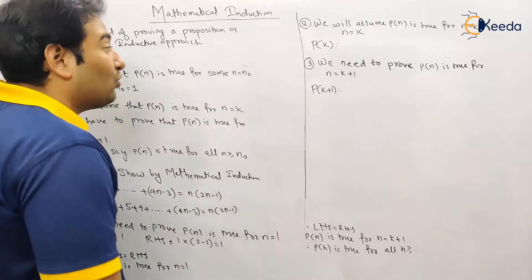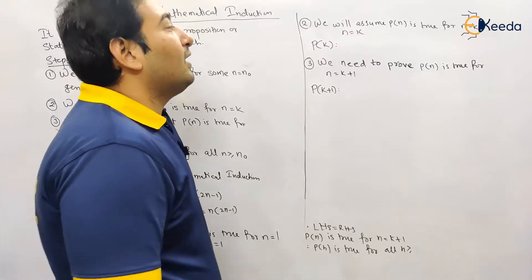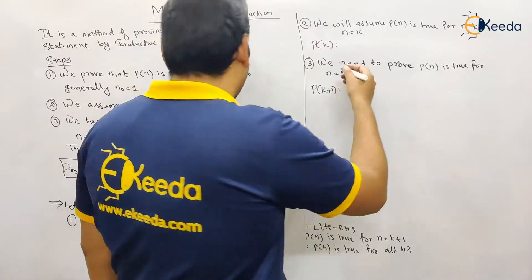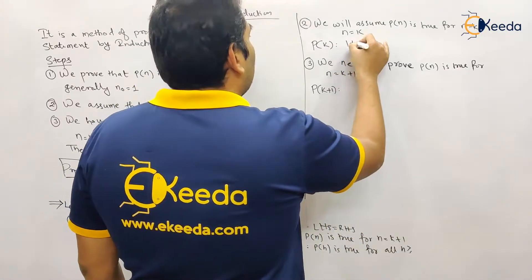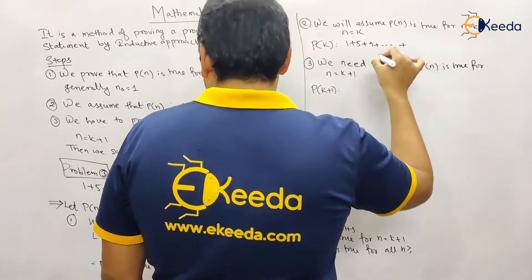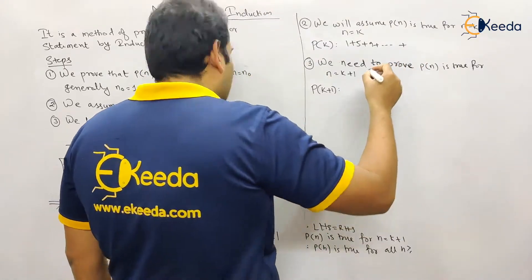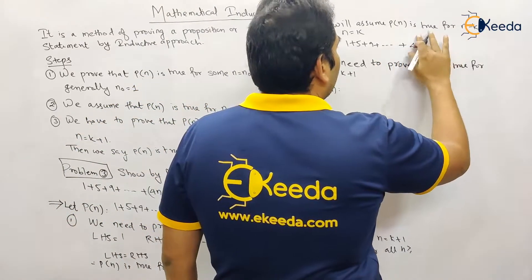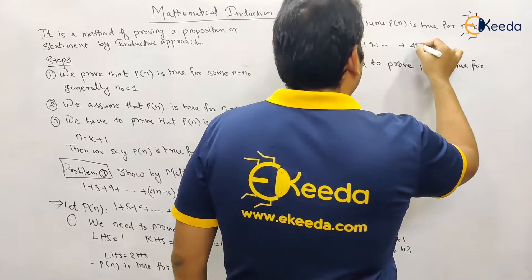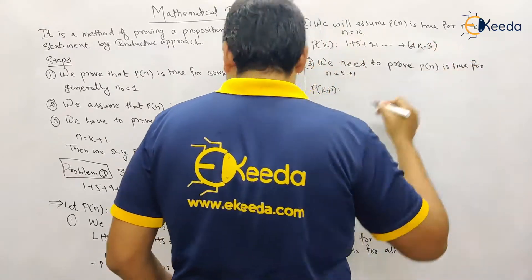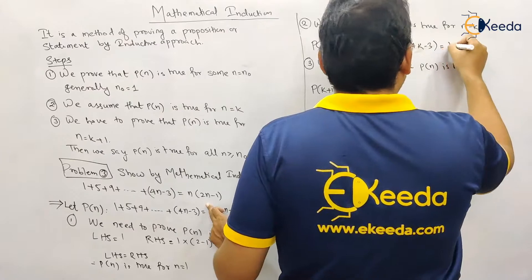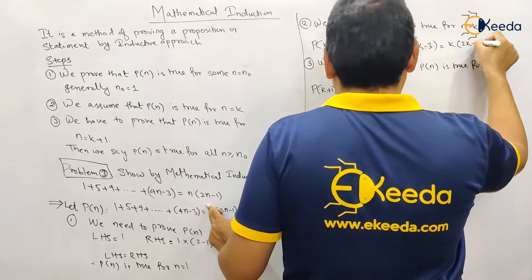Next, we assume the statement is true for n = k. So P(k): 1 + 5 + 9 + ... + (4k − 3) = k(2k − 1). This is our inductive hypothesis.